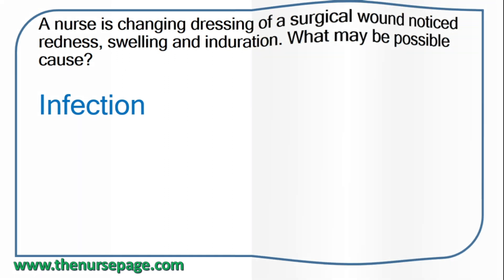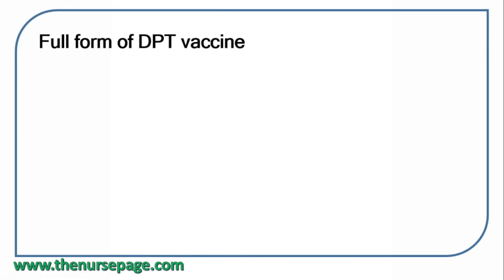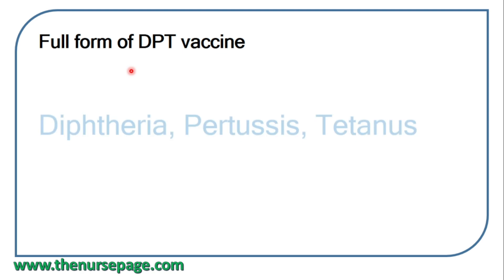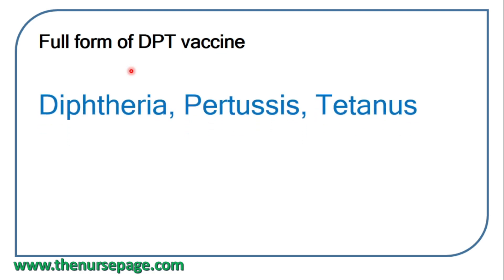Next question: full form of DPT vaccine — DPT stands for Diphtheria, Pertussis, and Tetanus. The DPT vaccine is used against diphtheria, pertussis, and tetanus.